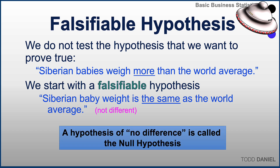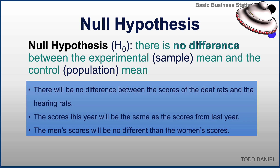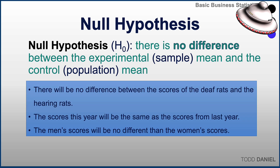A hypothesis of no difference is called a null hypothesis, and it is based upon the assumption that a sample mean should be the same as the population mean from which that sample was drawn. The null hypothesis states that there is no difference between an experimental mean and the control mean, or that there is no difference between a sample mean and the population mean. Here are some examples of how we might word a null hypothesis — look for the 'no difference' within each of these examples.